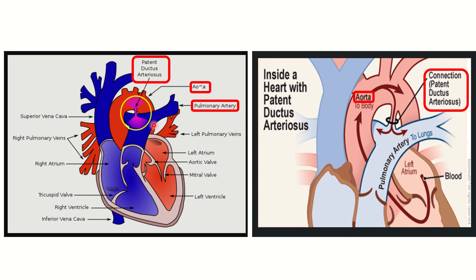In this diagram we can see this connecting, worm-like structure — this is the ductus arteriosus. It is usually present before birth, and immediately after birth this canal is obliterated, meaning the ductus arteriosus is closed. In the second picture we can also see the ductus arteriosus, which is very important in fetal life to maintain normal circulation of the fetus.